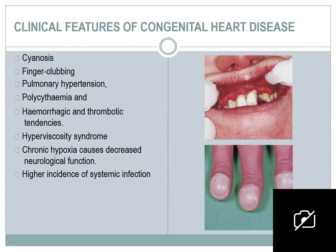Clinical features of congenital heart disease include cyanosis — the bluish discoloration of the lips, mucosa, or fingernails — and finger clubbing, seen in conditions like tetralogy of Fallot. You can also detect pulmonary hypertension, polycythemia, hemorrhagic and thrombotic tendencies, hyperviscosity syndrome, and chronic hypoxia causing decreased neurological function. There is a higher incidence of systemic infection.